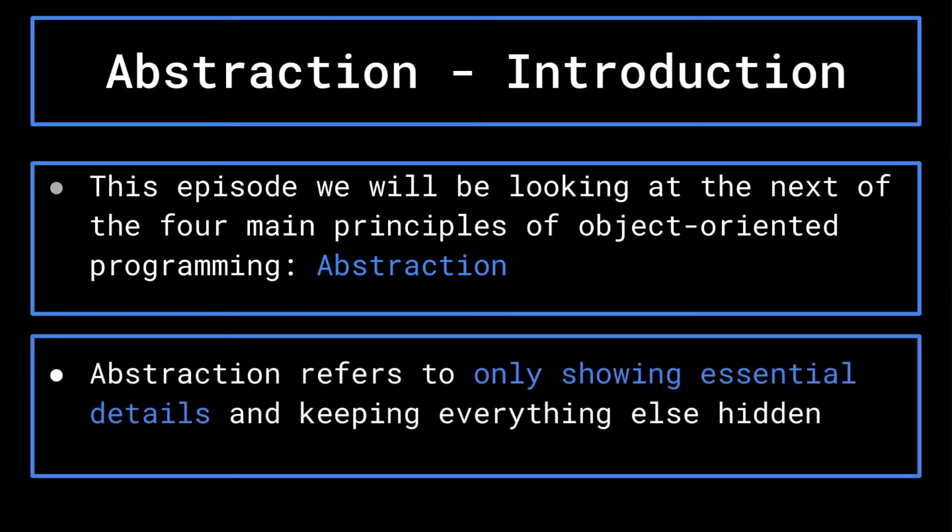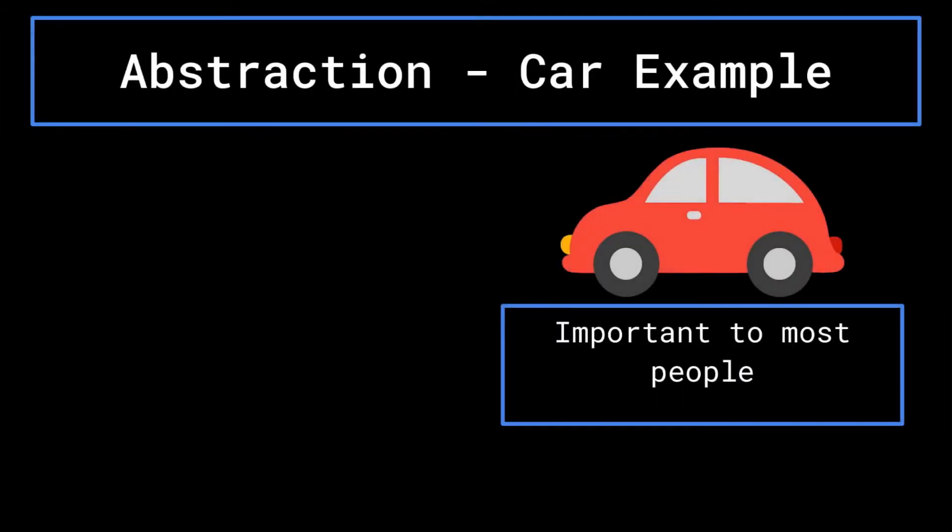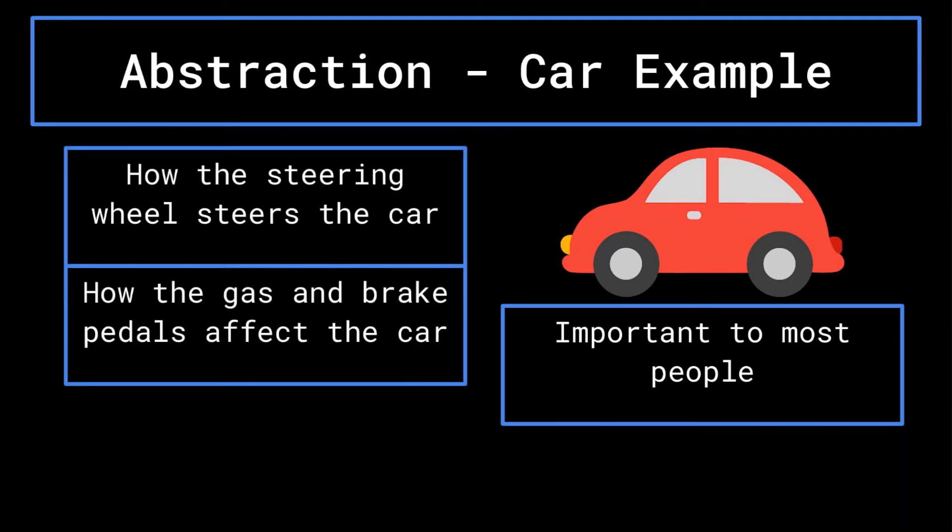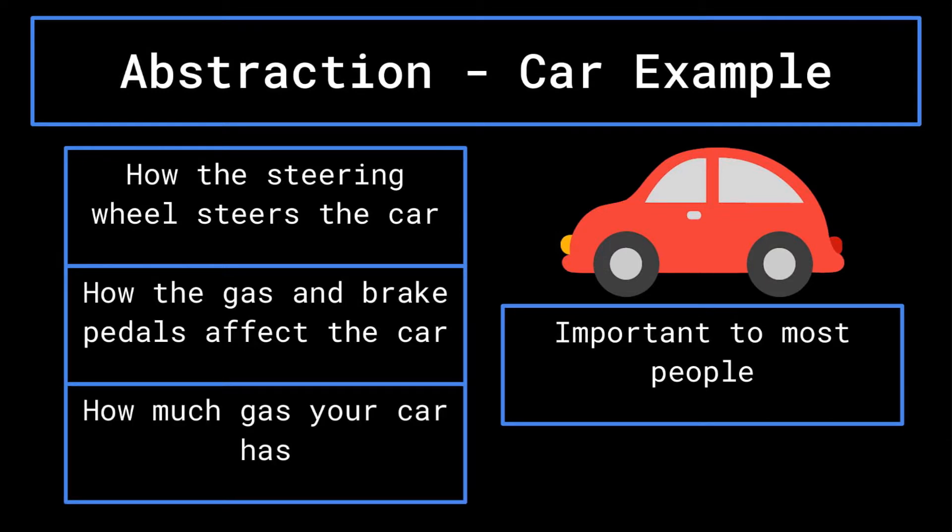Abstraction refers to the idea of only showing essential details and hiding everything else. This idea is present in everyday life. When you drive your car, there are some things that you need to understand about it. You need to understand how the steering wheel steers the car, and how the gas and brake pedals work. You also need to know how much gas your car has, and that it needs gas to work. These are necessary details for you to be able to drive the car properly.